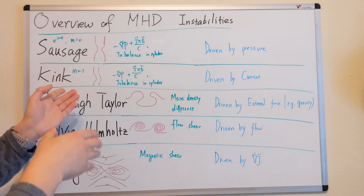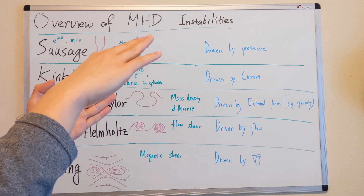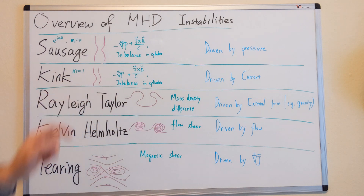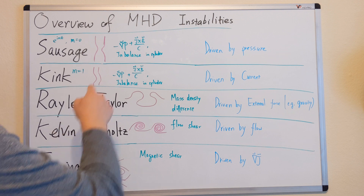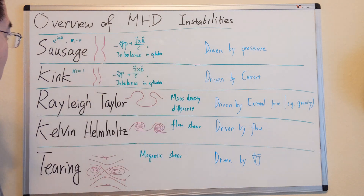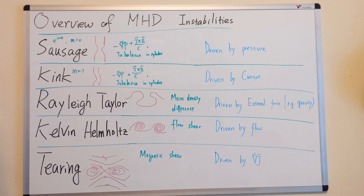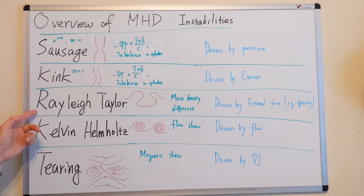For M equal to one, one side is inward and the other side is outward, so it becomes a kink. The sausage instability is driven by the pressure, and the kink instability is driven by the current. For more detail, you can refer to the book or the detailed derivation of those instabilities — I'll link it in the description.